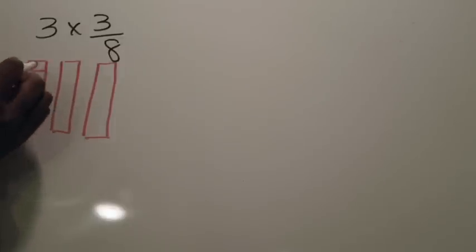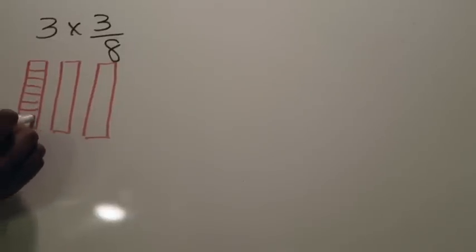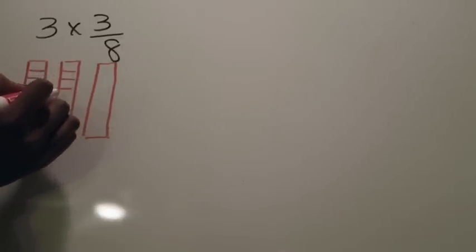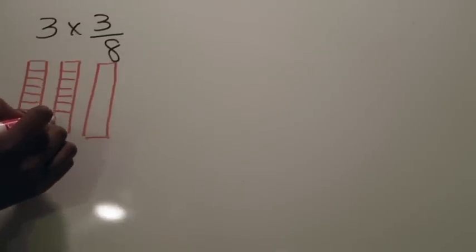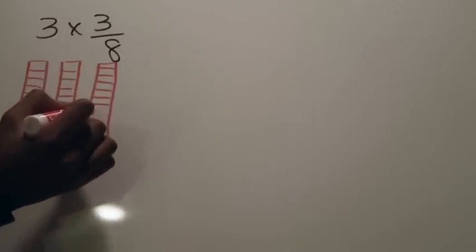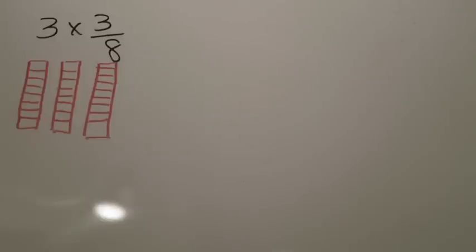I'm dividing each of the three wholes into eight equal parts — counting off one through eight for each whole. Now, these won't be perfectly equal because I'm drawing them freehand, but they represent three wholes that have been separated into equal parts. Don't spend too much time trying to measure your lines precisely; just make sure they represent equal parts.